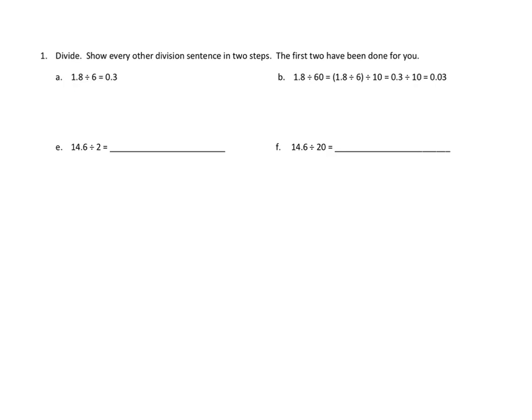Let's take a look at what they did in 1a. They first had this problem: 1.8 divided by 6 equals 0.3, or 3 tenths. I can see how they would have gotten that. 18 tenths divided by 6 would give us 3 tenths. Awesome.